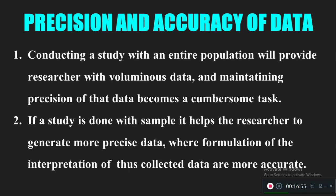The fourth purpose is precision and accuracy of data. When collecting data from the entire population, we get voluminous data, which is very hectic for the researcher to analyze. Processing more information makes it hard to achieve precision and becomes a cumbersome task. But when we collect data from a sample, it is easy, accurate, and precise to formulate and interpret results, and it is very easy to generalize the findings. These are the four purposes of sampling in research.